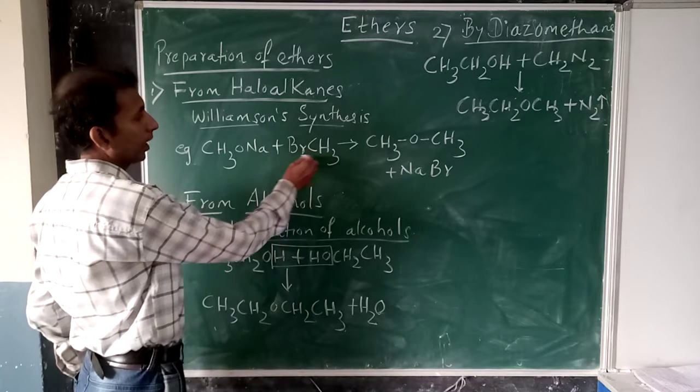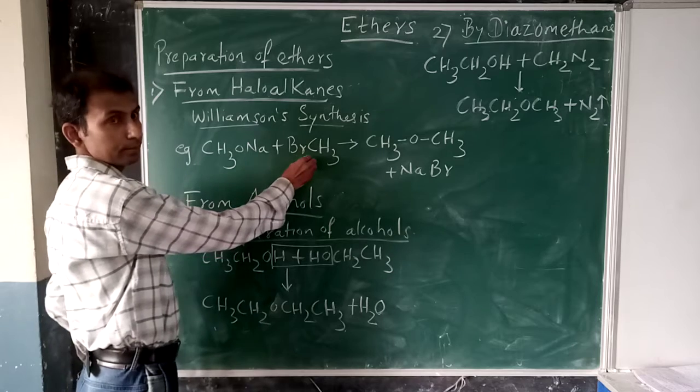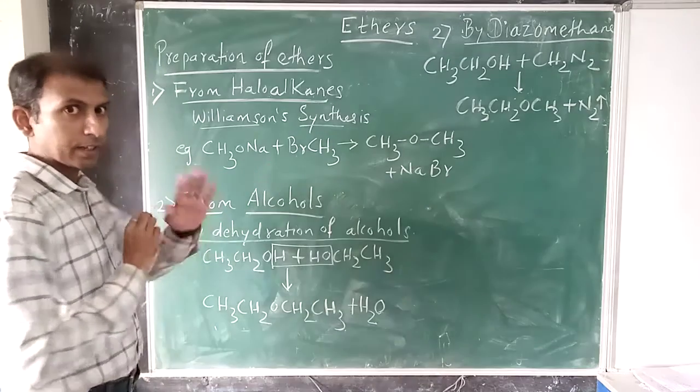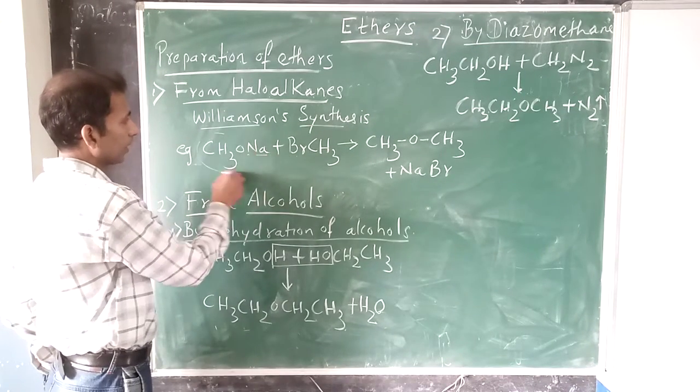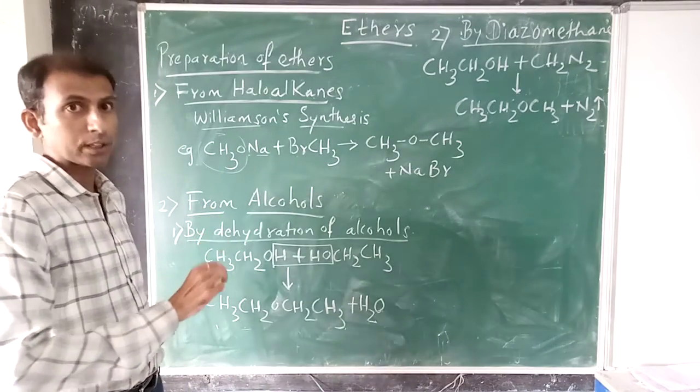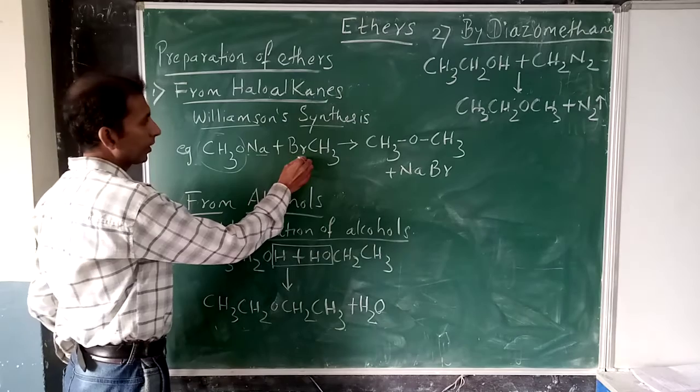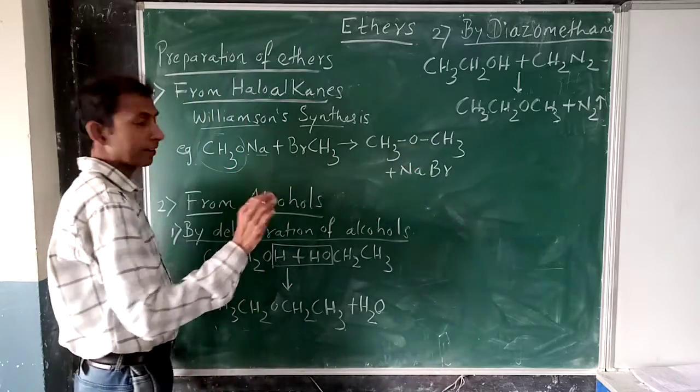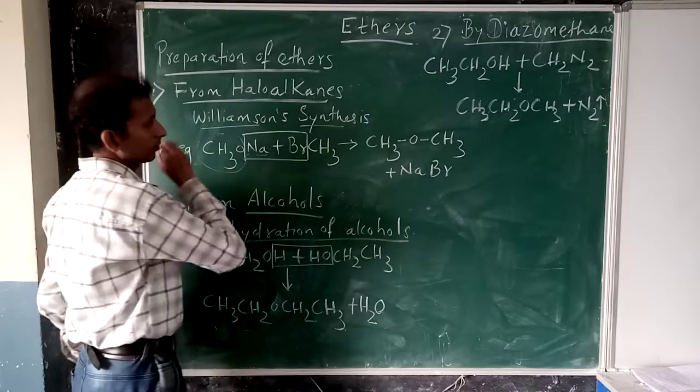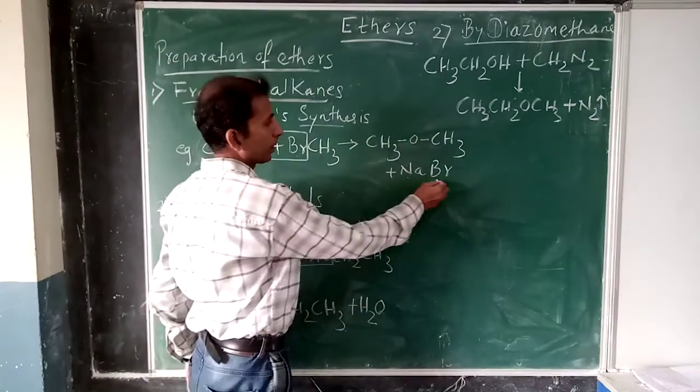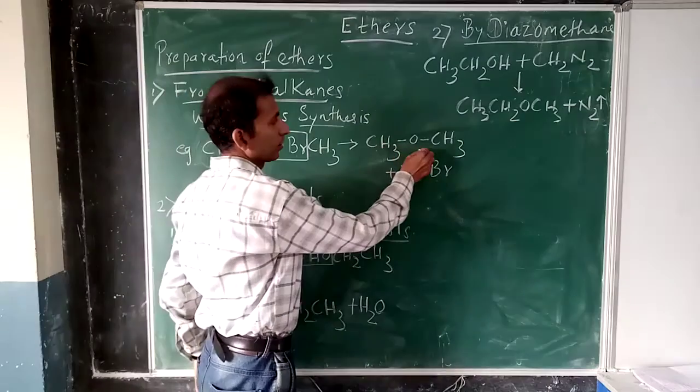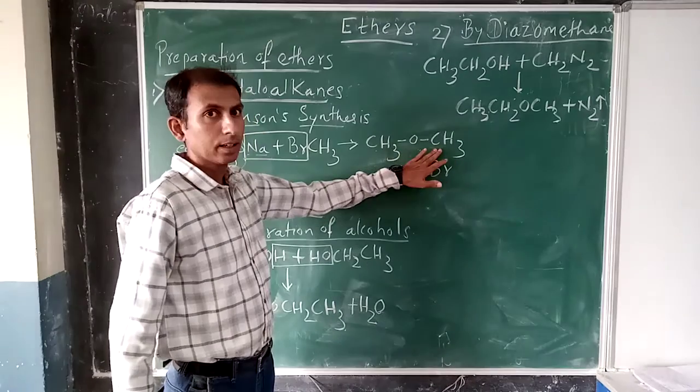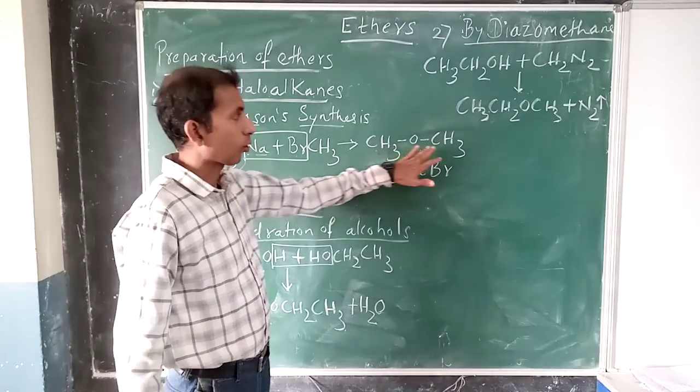When haloalkanes are treated with sodium alkoxide, we get ethers. What is eliminated here? The byproduct is NaBr. So you get ether. The IUPAC name for this ether is methoxymethane.